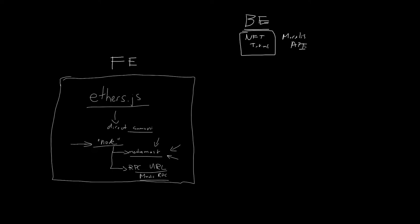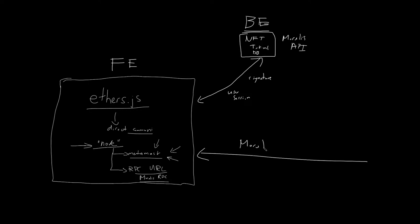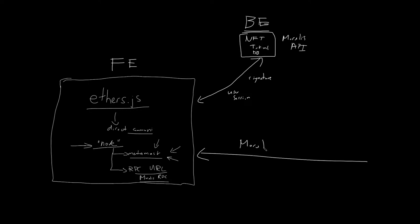On the back end you would normally use an API — the Moralis API can provide most of what you need about blockchain data. You also have to figure out how to establish a user session based on wallet login. You need to verify a signature to create a cookie that establishes a normal web session with your server. Normally you'd have to do this yourself, but the Moralis SDK does it for you — it establishes the session and creates a user entry in your database.